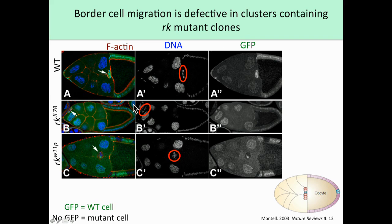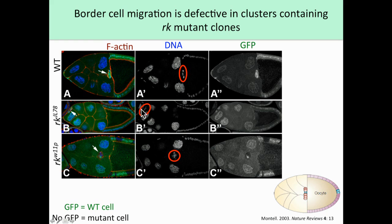I wanted to find out what would happen to border cell migration when I mutated RICKETS in the border cells. I generated mosaic egg chambers with wild-type cells expressing GFP and mutant cells lacking GFP. Here is a wild-type border cell cluster that has completed its migration. Below are two border cell clusters containing some GFP-negative RICKETS mutant cells. When the border cell clusters contain cells that are mutant for RICKETS, the clusters fail to complete their migration and remain at more interior regions of the egg chamber.